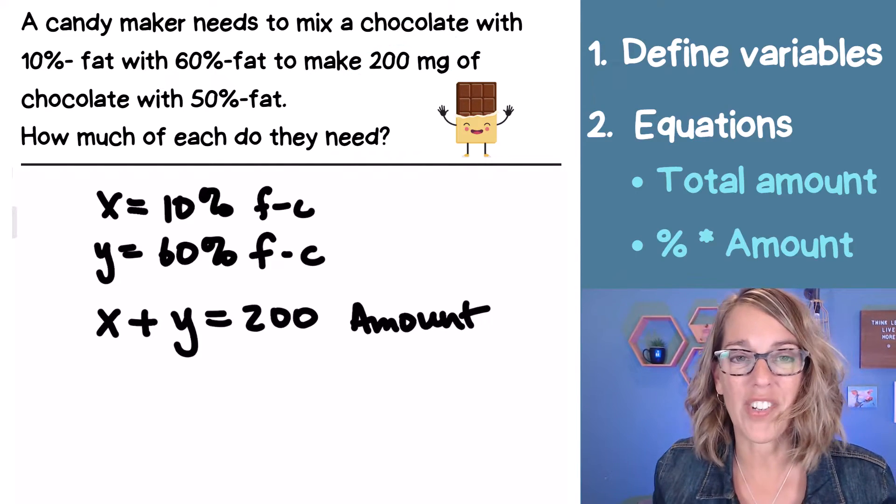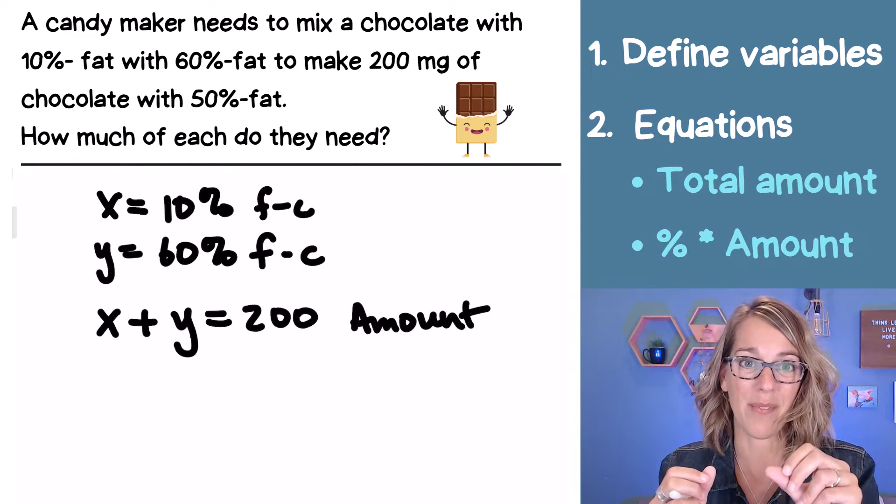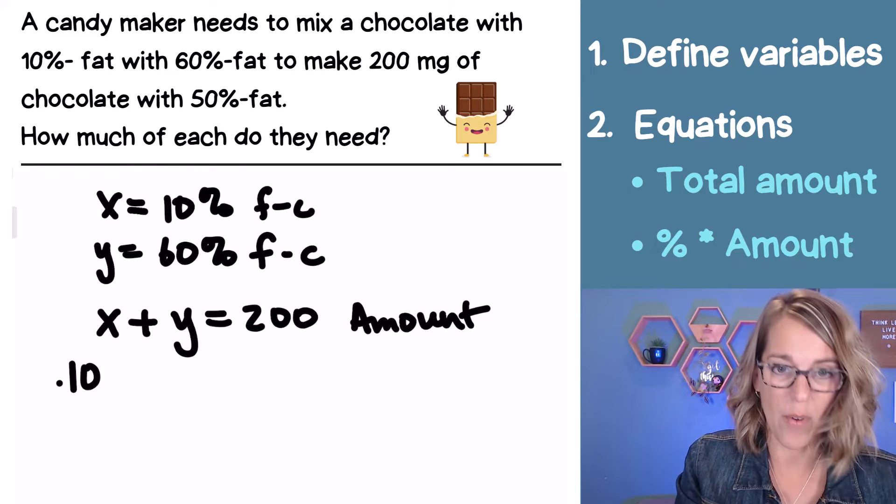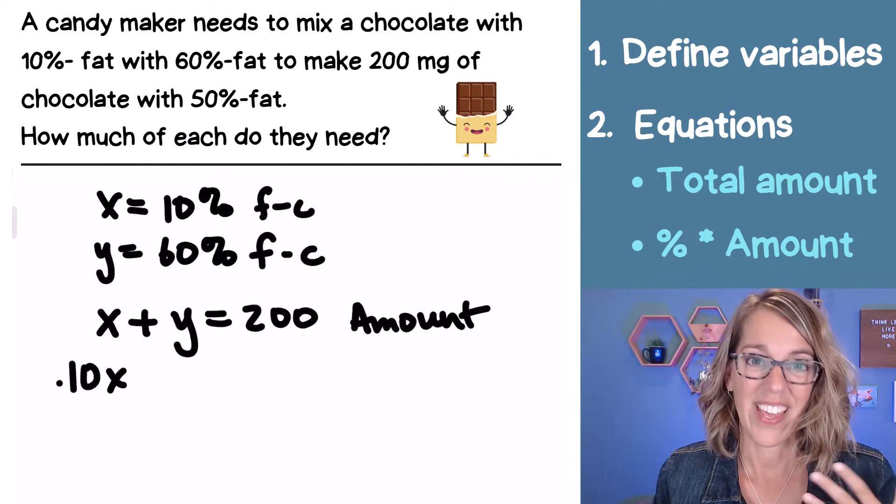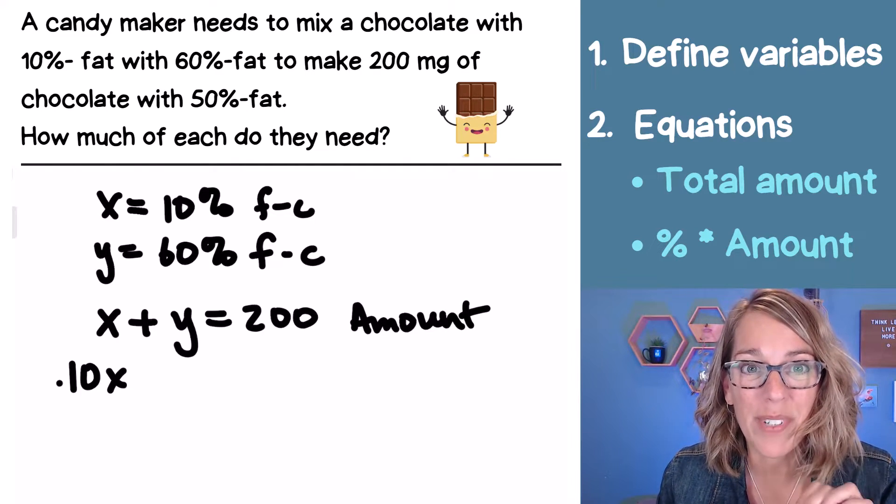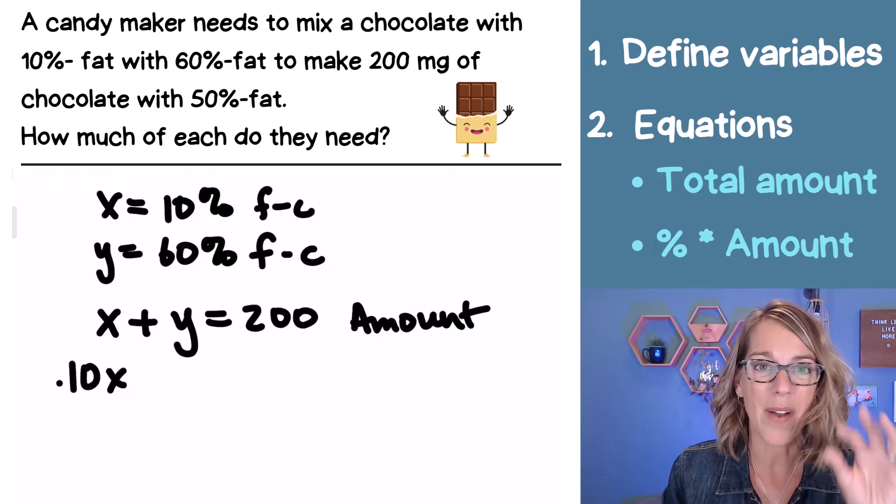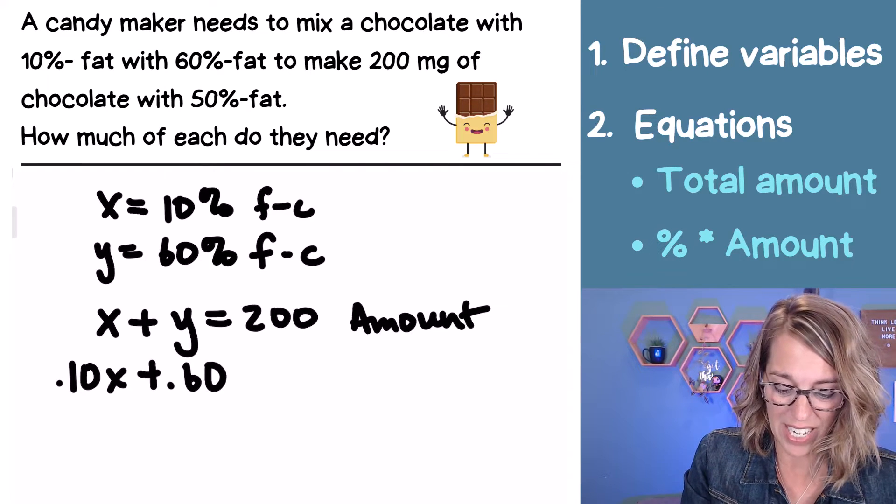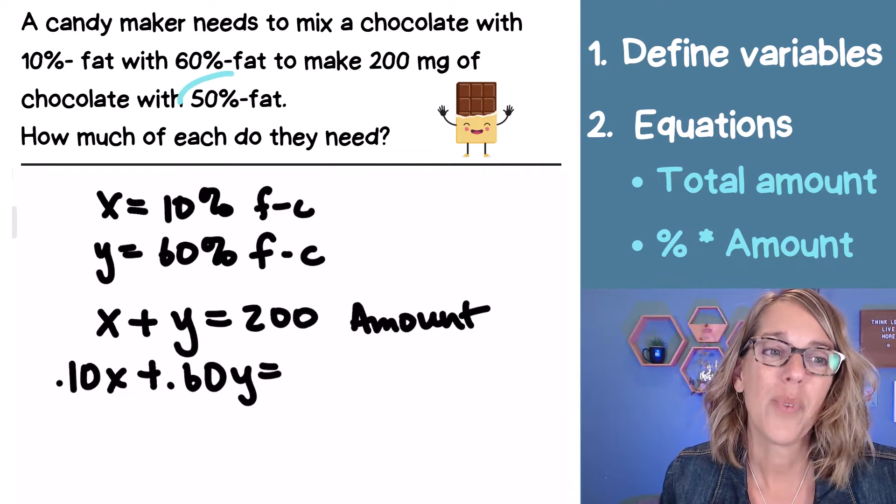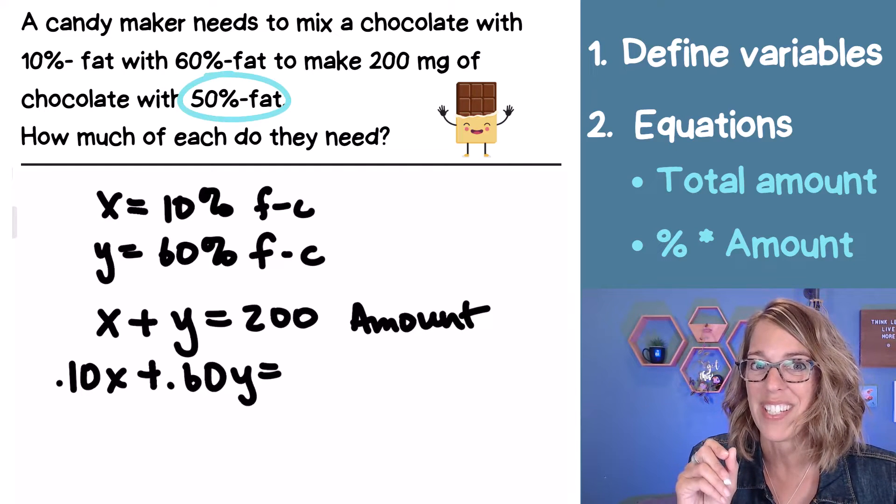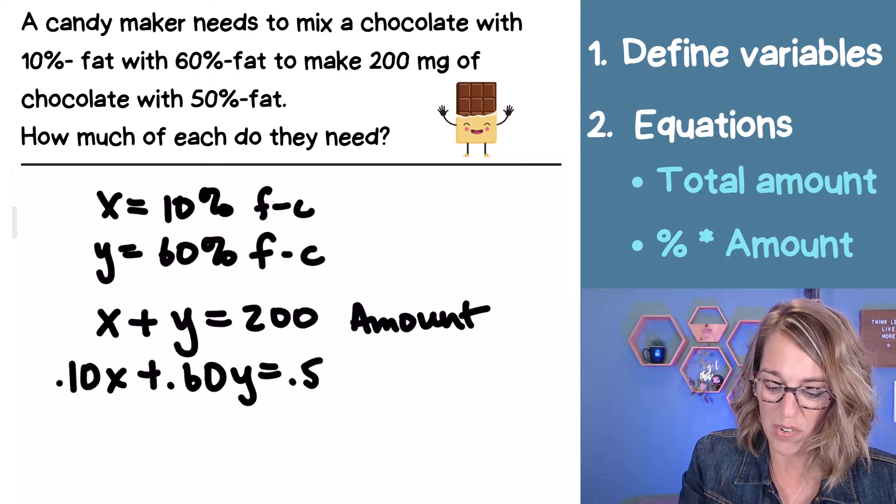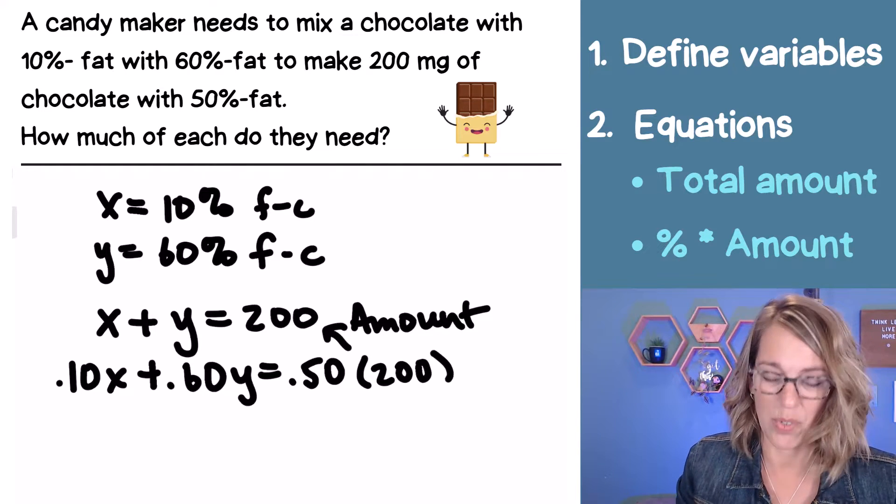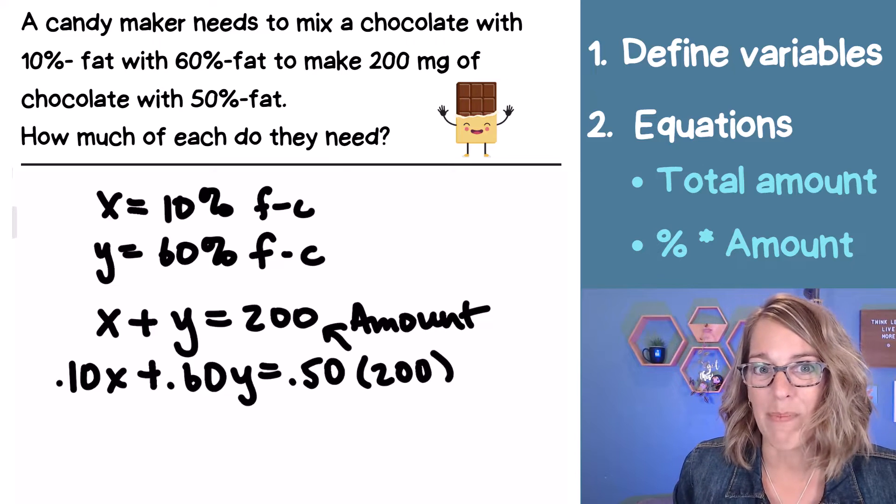I also want to come up with an equation where I'm multiplying the percent times the amount. So in this case, I've got 10% fat. So that's going to be 10% or 0.10 times the amount. This is X. That 10% times X represents the fat content. So this percent times amount is now specifically my fat content. So 0.10X plus Y was 60%. So 0.60Y is equal to, we want 50%, but I need another amount times that percentage. So it's going to be 0.50 times its amount, which I get from the equation above. So I'm going to use parentheses times 200. So there's my percent times amount for each of these.